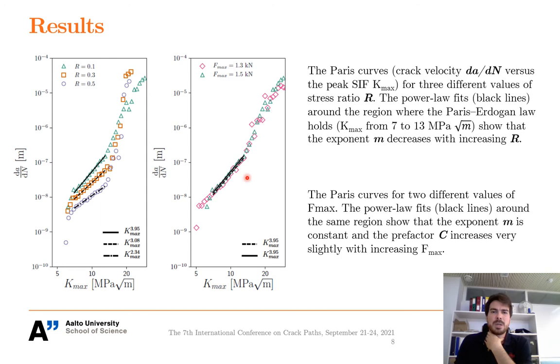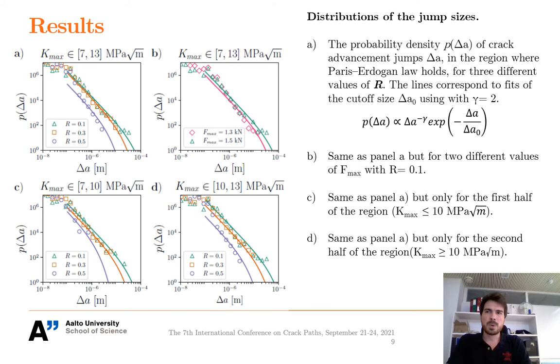Secondly, as F_max increases from 1.3 kN to 1.5 kN, the exponent M stays constant, but there is a tiny increase in the pre-factor C. These values are typical for aluminum alloys, where M is usually slightly over 3, but sometimes smaller. We also note that the usual models of the effect of R only apply a shift in the stress intensity factor term, and do not change the slope in the Paris plots, and therefore are not effective here.